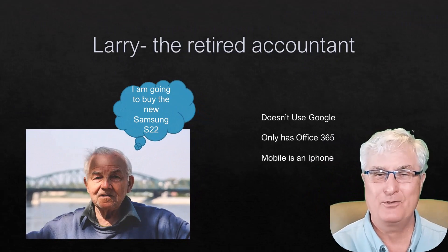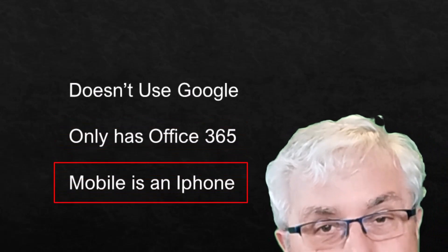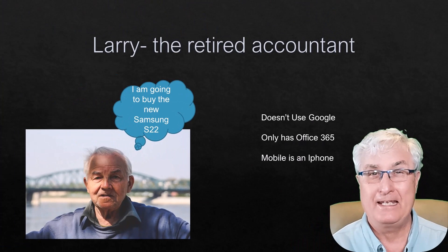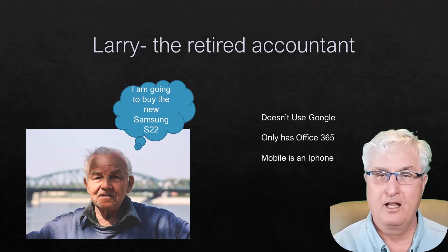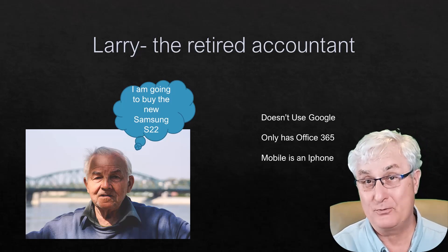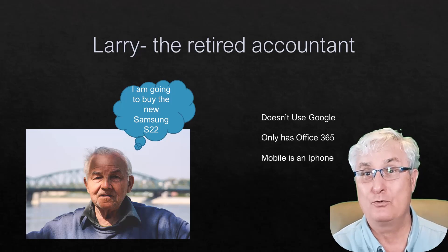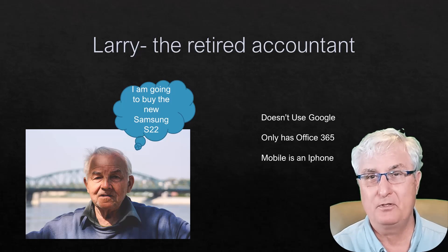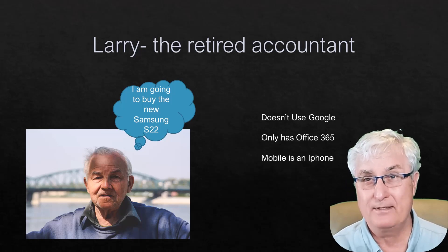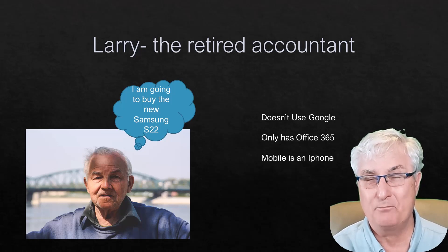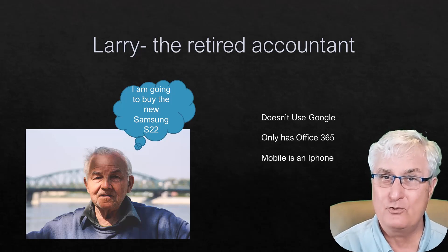Larry is a retired accountant who comes to our tech department. He doesn't use Google, only has Office 365 and an iPhone, but he's going to purchase a Samsung S22. As you know, Larry will have to establish a Google account with his Android phone — the first thing he'll be asked to do as he sets up his S22 is to put in his Google username and password. I don't believe Larry has gone through his life without a Google account. He probably has one from the past, and his data will likely be in there — Google Photos or other services.